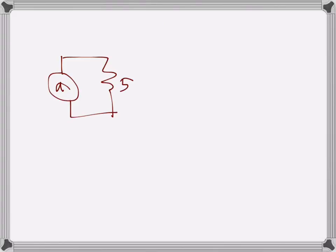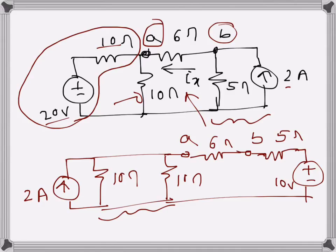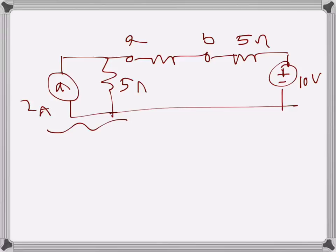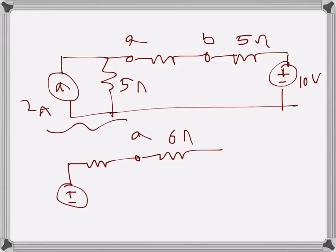So the equivalent value will be 5 ohms here, with 2 amps current source. We have terminal a, 6 ohms, terminal b, and on the other side 5 ohms with 10 volts voltage source. Now this current source with parallel resistance I will convert back into a voltage source with a series resistance — source conversion again. So we have 6 ohms and terminal b, then 5 ohms.